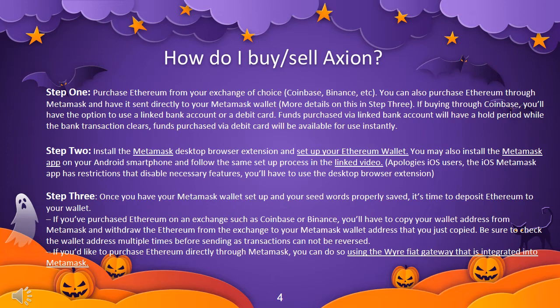Step 3: Once you have your Metamask wallet set up and your seed words properly saved, it's time to deposit Ethereum to your wallet. If you've purchased Ethereum on an exchange such as Coinbase or Binance, you'll need to copy your wallet address from Metamask and withdraw the Ethereum to that address. Be sure to check the wallet address multiple times before sending, as transactions cannot be reversed. If you'd like to purchase Ethereum directly through Metamask, you can do so using their integrated fiat gateway.